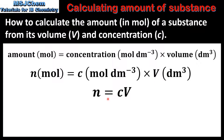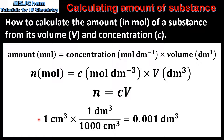Here we have an easy way to remember this equation: n equals CV. Note that the volume in this equation must be in decimeters cubed. To convert between centimeters cubed and decimeters cubed, multiply the volume in centimeters cubed by 1 over 1000. For example, 1 centimeter cubed is equal to 0.001 decimeters cubed.